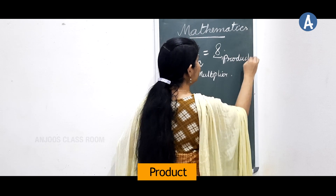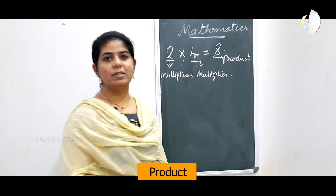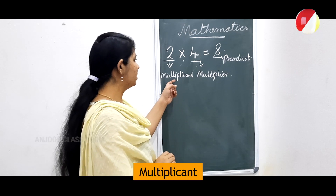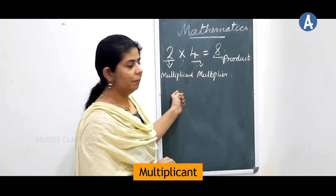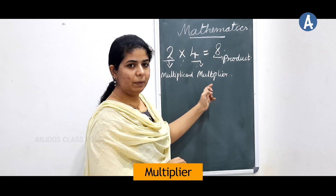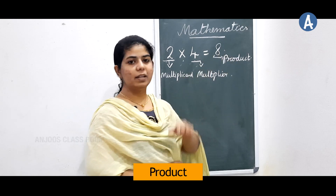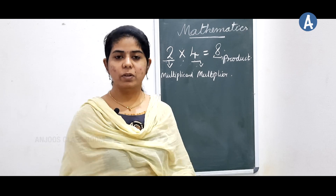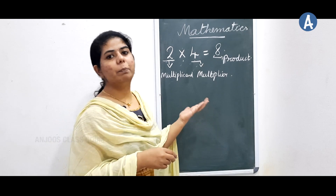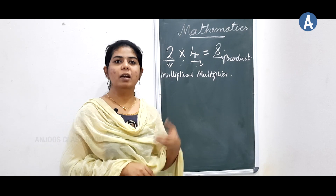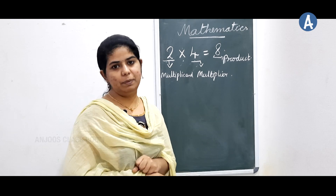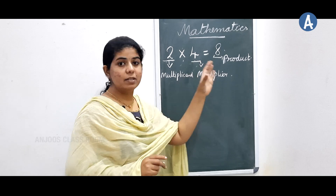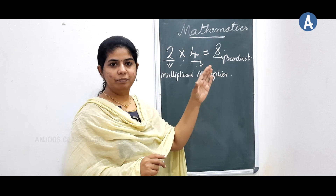The answer we get after multiplying is called the product. So the three terms are: multiplicand, multiplier, and product. If a question says 'find the product,' it means find the answer after you multiply. That is the product.